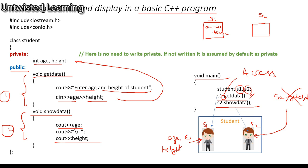If by mistake you write S2.show_data without calling S2.get_data first, there are no values in the S2 object so it will show nothing. Therefore you have to write S1.show_data to display the data for S1. This is the basic program — just to get data and display data.